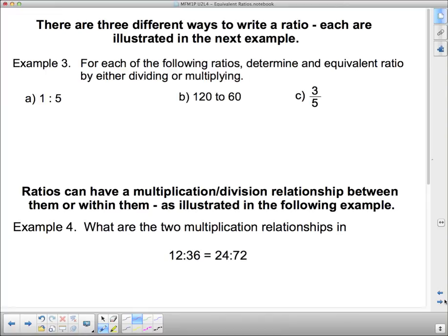There are 3 different ways to write a ratio. Each are illustrated in the next example. For each of the following ratios, determine an equivalent ratio by either dividing or multiplying. Now, we're going to talk about equivalent ratios. And we're going to write them in the form that they're in. So we can do it by either multiplying or dividing. So 1 to 5, if I multiply both by 2, 1 to 5 is equivalent to 2 to 10. How did I get 2 to 10? I took 1, and I multiplied it by 2. And I took 5, and I multiplied it by the same thing, by 2. Now, we didn't have to multiply by 2. We could have multiplied by anything else. We could have multiplied by, say, 10. If I multiply this by 10, I get 10. And if I multiply this by 10, I get 50. So 2 to 10, 10 to 50, those are both equivalent to 1 to 5.